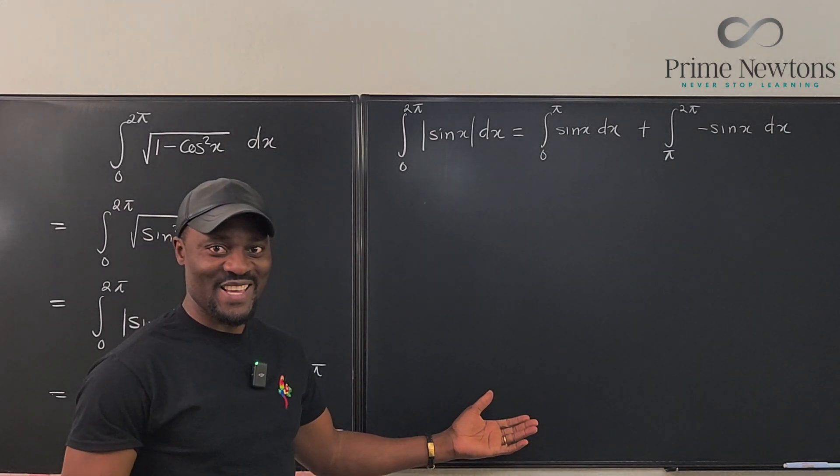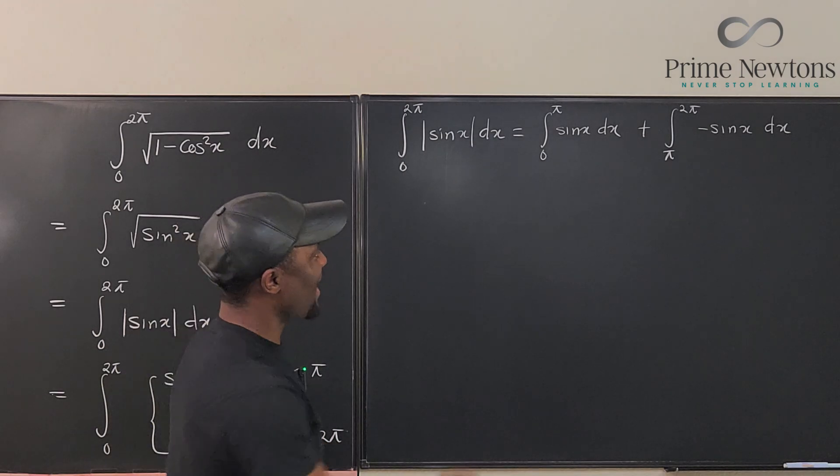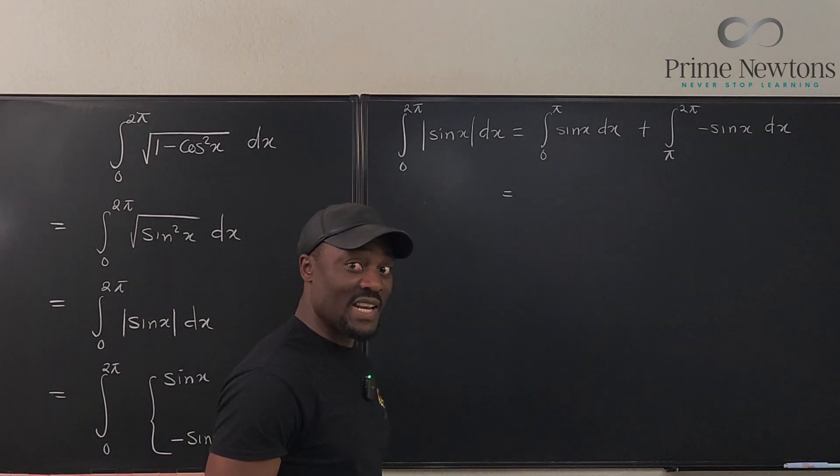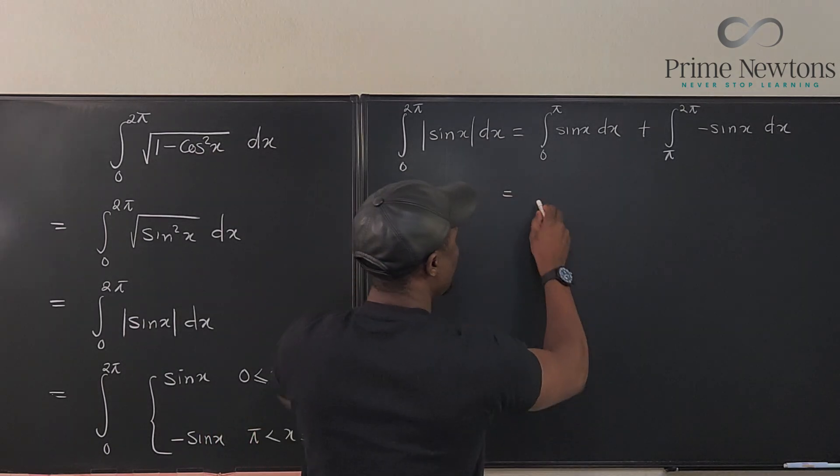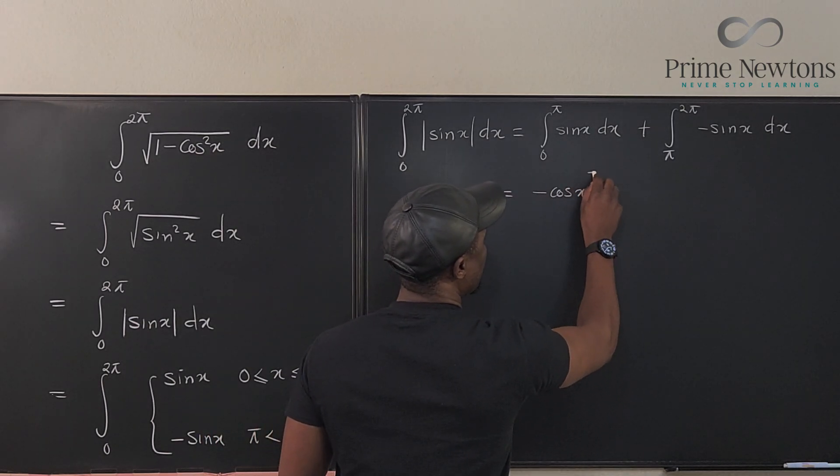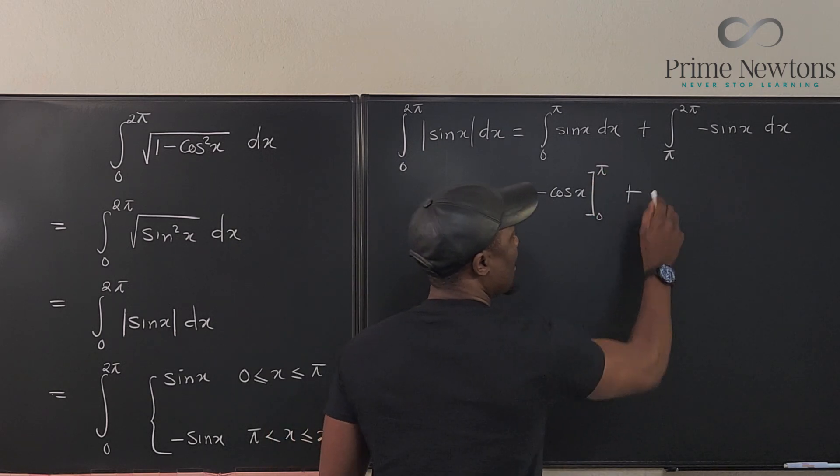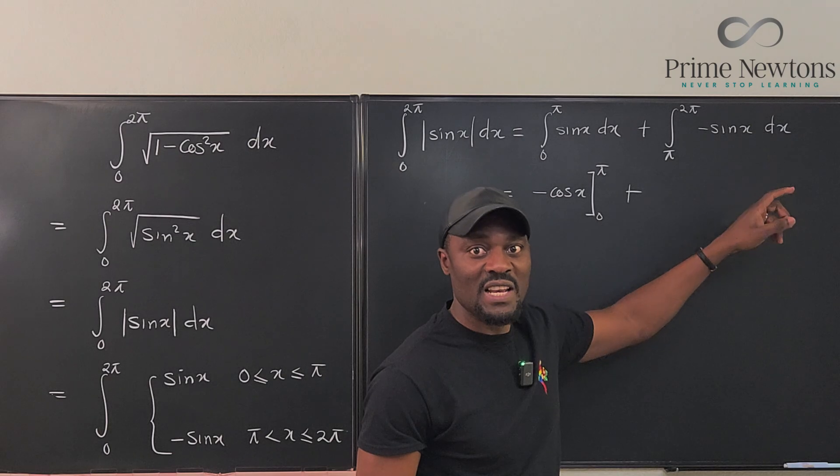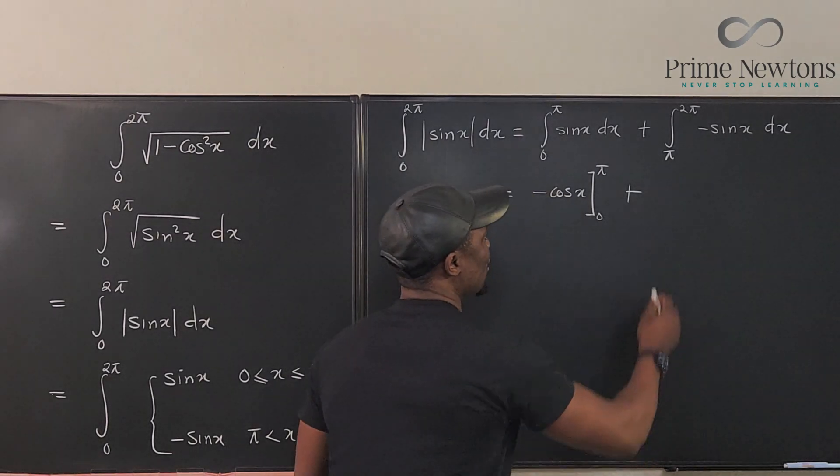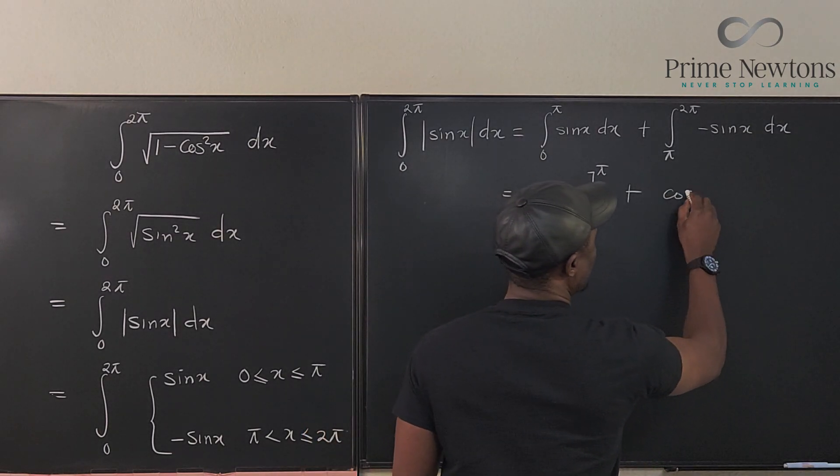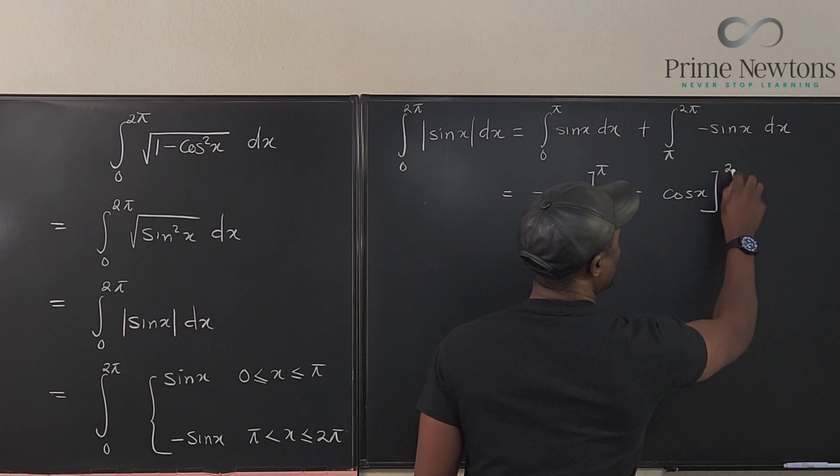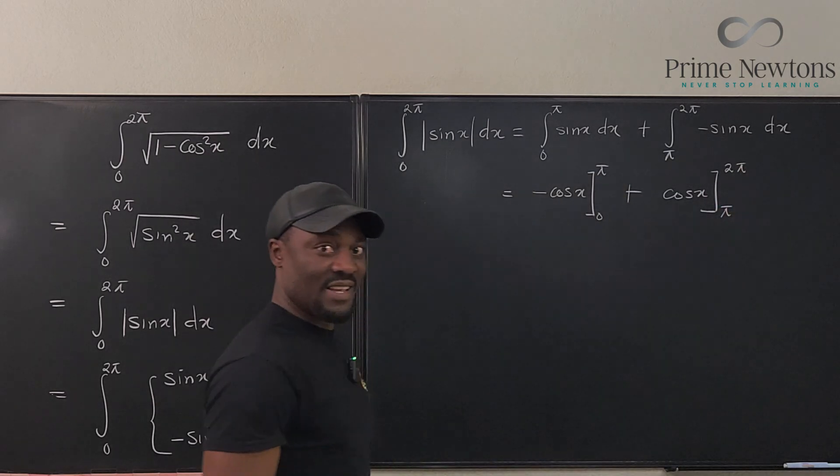So we can say that this is equal to, if we integrate sine x, what do we get? Negative cosine x. So this is going to be negative cosine x evaluated from zero to π, plus we're going to integrate this. If you integrate negative sine x, you get positive cosine x. So we're going to have cosine x evaluated from π to 2π. And that's it.